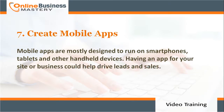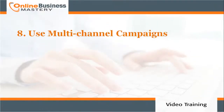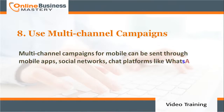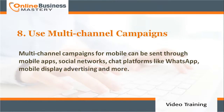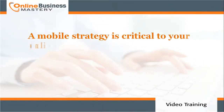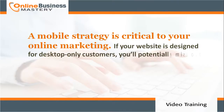Number seven: create mobile apps. Mobile apps are mostly designed to run on smartphones, tablets, and other handheld devices. Having an app for your site or business could help drive leads and sales. Number eight: use mobile channel campaigns. Multi-channel campaigns for mobile can be sent through mobile apps, social networks, chat platforms like WhatsApp, mobile display advertising, and more. A mobile strategy is critical to your online marketing.